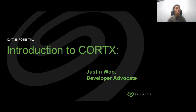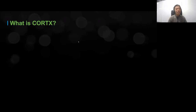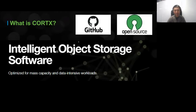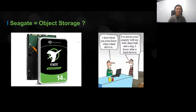So what is Cortex? Cortex is an intelligent object storage software optimized for mass capacity and data-intensive workloads. More importantly, Cortex is 100% on GitHub and 100% open source. Cortex is created by Seagate — and you might be asking, what has Seagate got to do with object storage? We're traditionally hard drive experts.